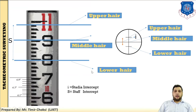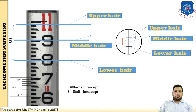First, you need to understand the staff intercept and stadia intercept. The staff intercept means you take readings from the stadia hair. The instrument used for tachymetry surveying is the tachymeter. In a tachymeter, the stadia diaphragm is fitted. The stadia diaphragm has one horizontal crosshair, one vertical crosshair, as well as an upper crosshair, middle crosshair and lower crosshair. The upper and lower crosshairs are equally distanced from the central crosshair.